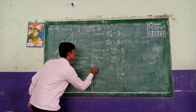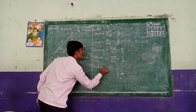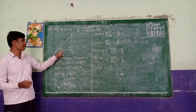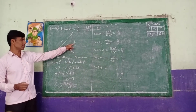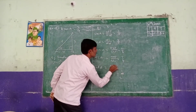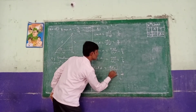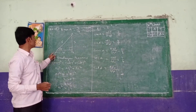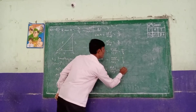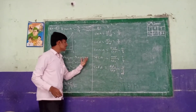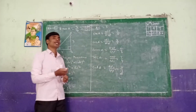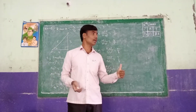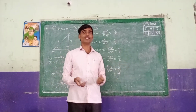Next, cot A equals adjacent side by opposite side. Adjacent side equals 4 and opposite side equals 3. So cot A equals 4 by 3. This type of problem depends on trigonometric ratios — if you know them perfectly, you will find it very easy. Thank you.